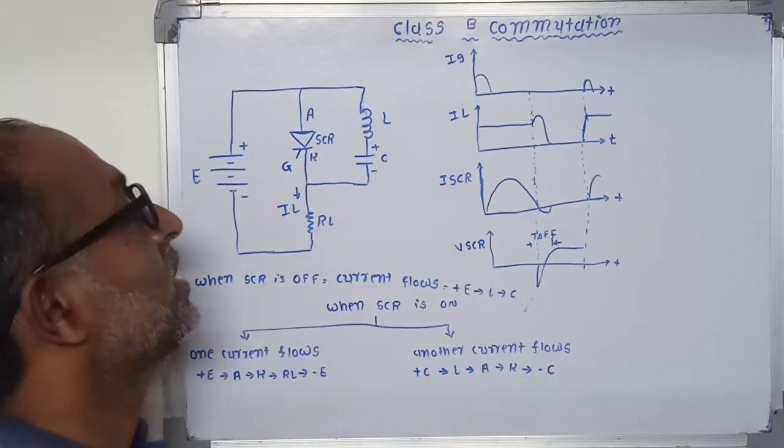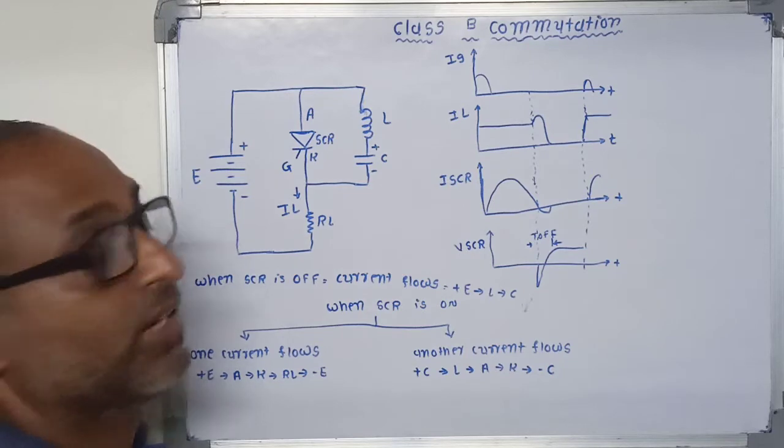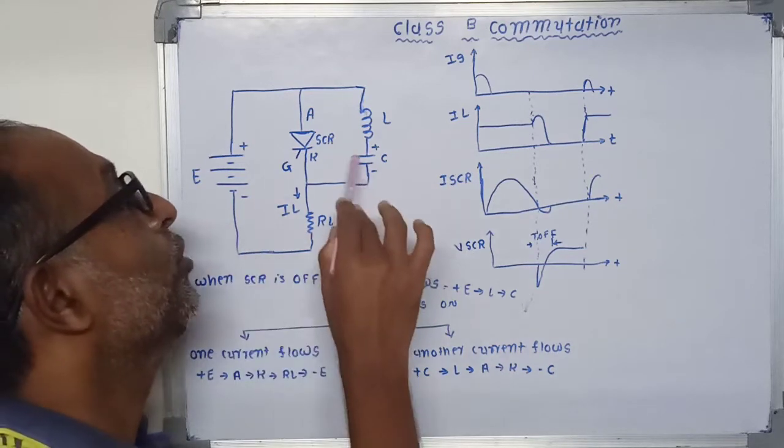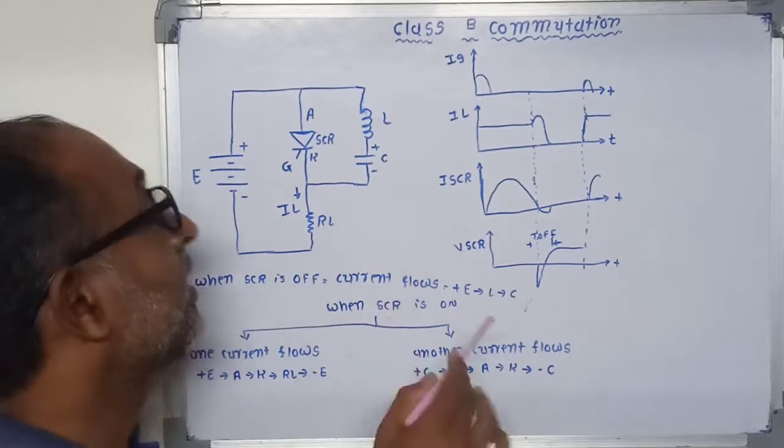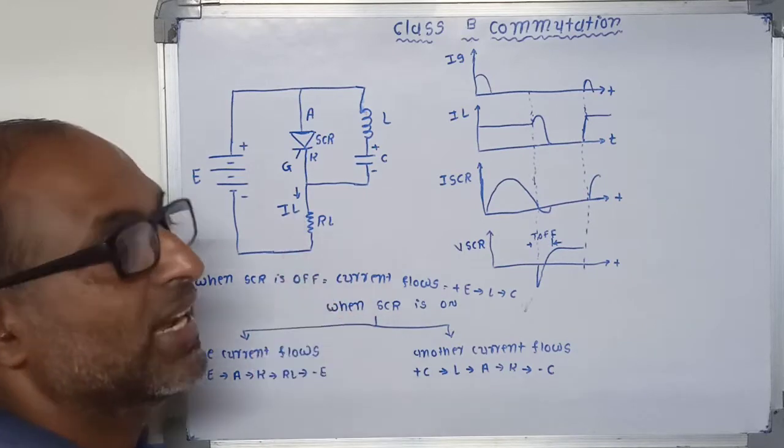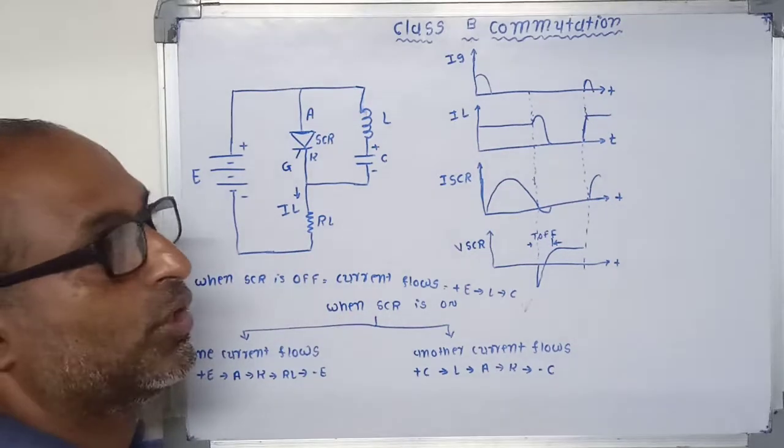Both are in reverse direction. When the value of commutating current IC is greater than the load current, the SCR will turn off.